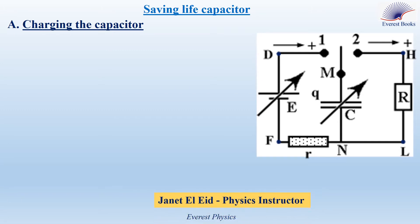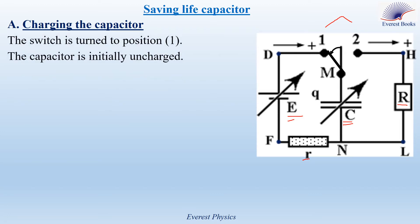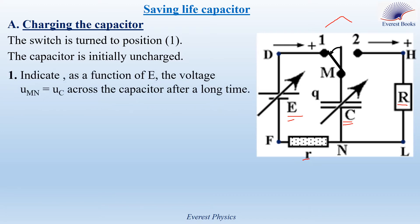A heart suffering from disordered muscular contractions is treated by applying electric shocks using a convenient apparatus. In order to study the functioning of this apparatus, we use an ideal source of DC voltage of adjustable value E. Look at the circuit: a capacitor of adjustable capacitance C, a resistor of resistance small r, another resistor of resistance capital R, and an SPDT switch. The switch is turned to position 1. The capacitor is initially uncharged. Indicate as a function of E the voltage UMN, taken as UC, across the capacitor after a long time.